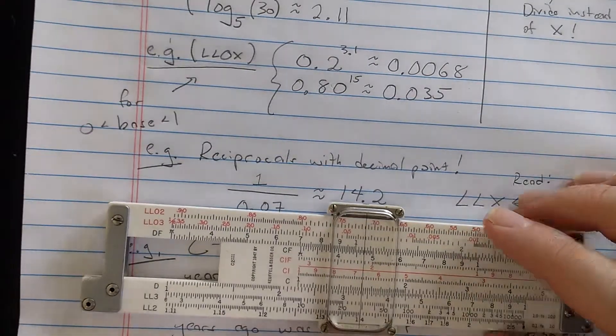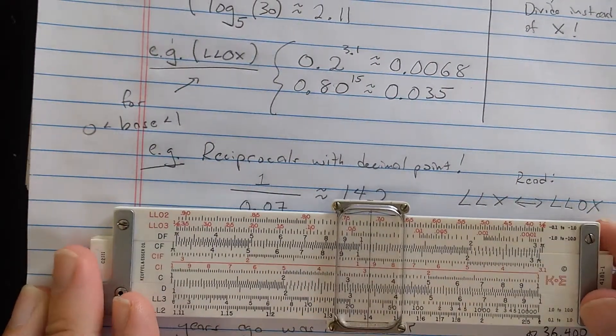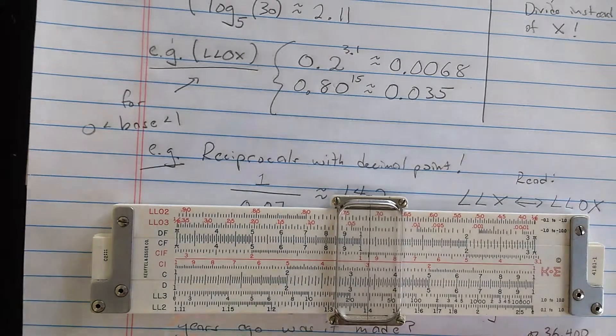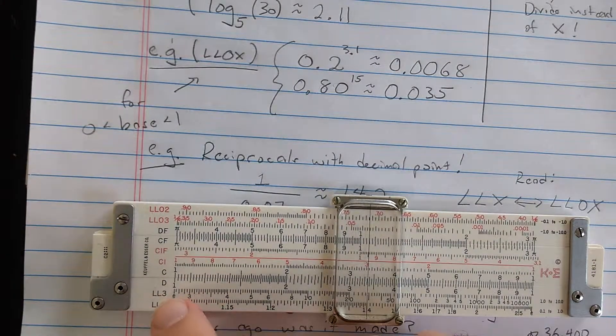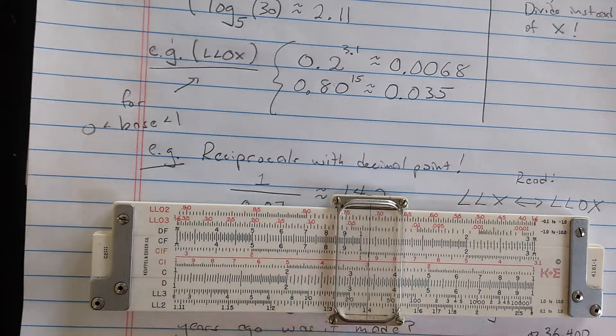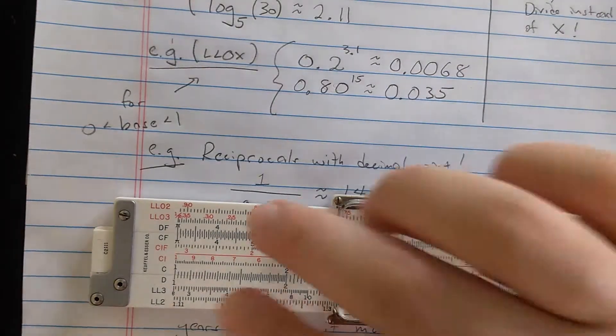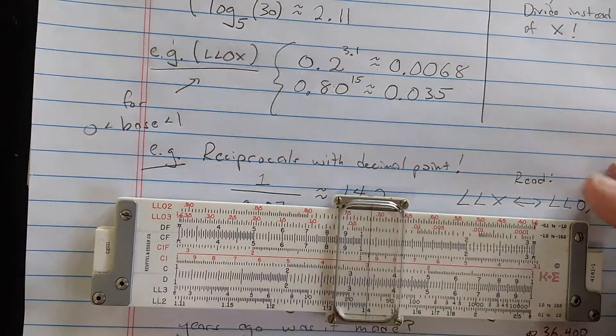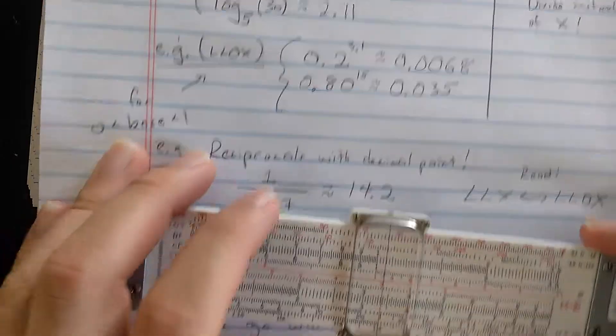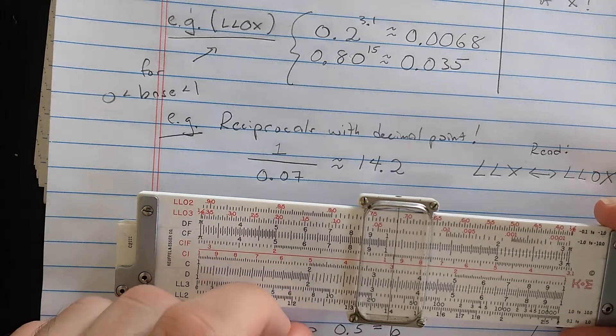Interesting thing is, what these things do is they compute e to the minus x. If LL something here computes e to the x, LL0 something computes e to the minus x. So the interesting thing is with respect to each other, they compute reciprocals. So you could find a number, let's say 0.0567.